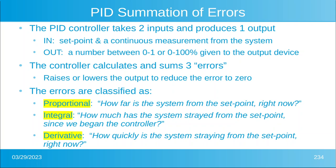The controller calculates and sums three errors, then raises or lowers the output so that we are striving continuously to make that error equal to zero. We wanted the temperature of the fish tank to be 76 degrees — not 77, not 76.5, not 75.5 — we want 76. There are three errors classified as proportional: how far is the system from the set point right now? We want the integral error: how much has the system strayed from the set point since we began this controller? This is a sum of small errors in theory. Then we want the derivative: how quickly is the system straying from the set point right now? This sounds fancy, but we'll understand it easier if we think about how it was designed.